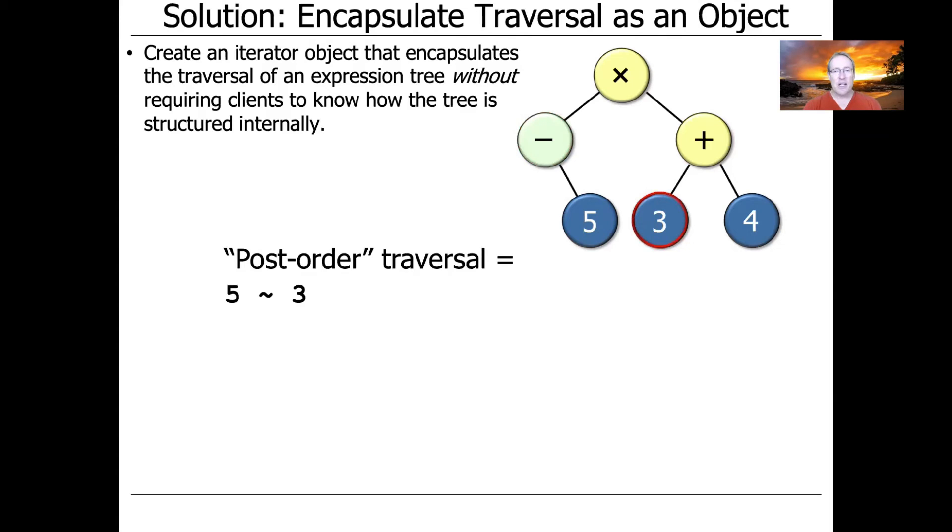Next, we continue our traversal. We visit the three in the tree, then we visit the four in the tree, then we visit the plus, and then we finally visit the times or the multiplication symbol. And that ends up with our post-order traversal of the tree.